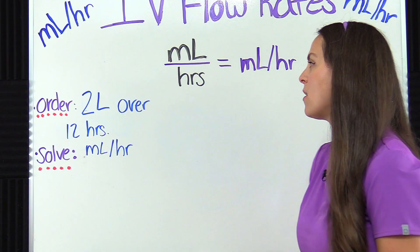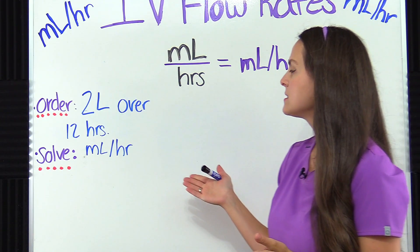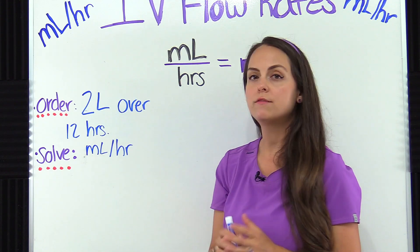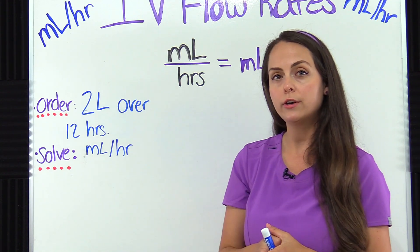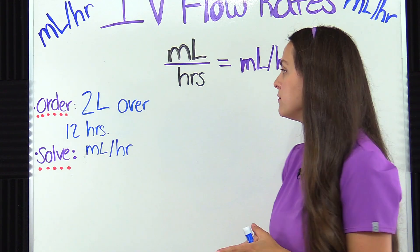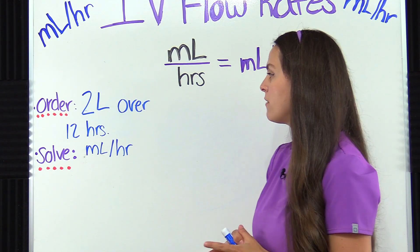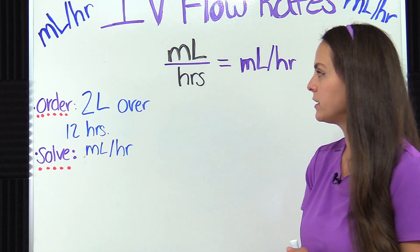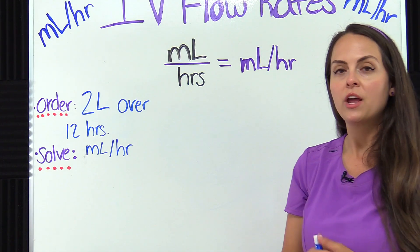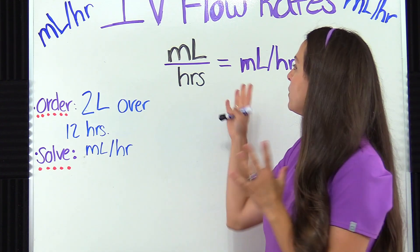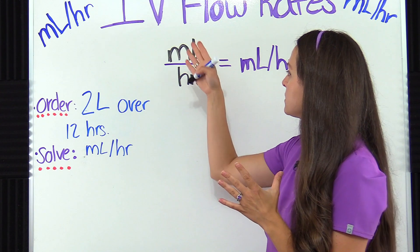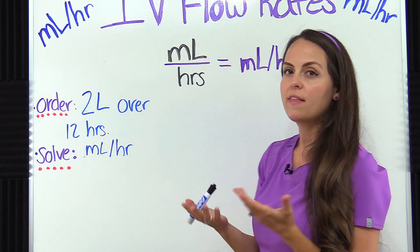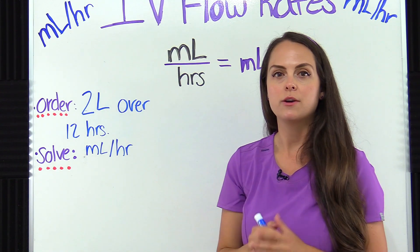Now let's look at this problem. The physician has ordered the patient to receive two liters to be infused over 12 hours, and we need to solve for the hourly rate, the milliliters per hour. With our formula it's milliliters over hours — we divide that and we get our answer.